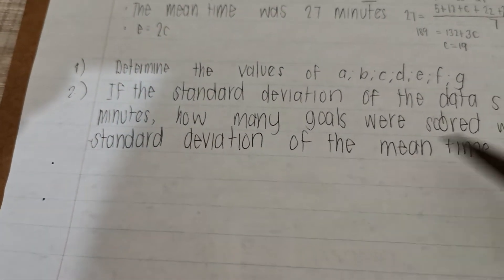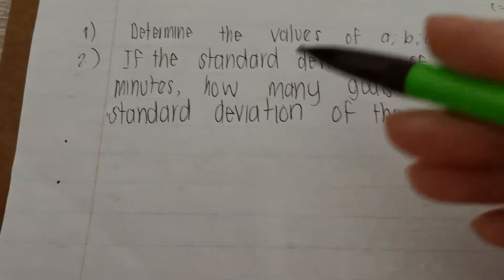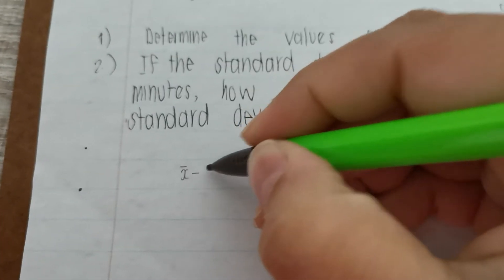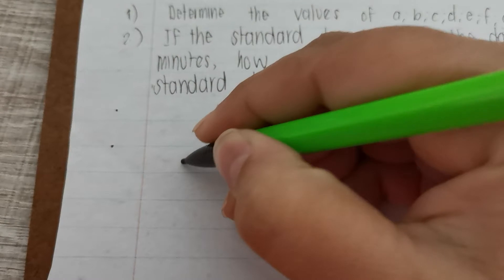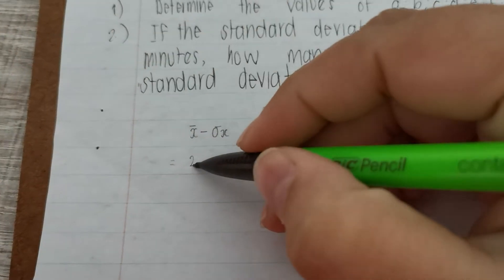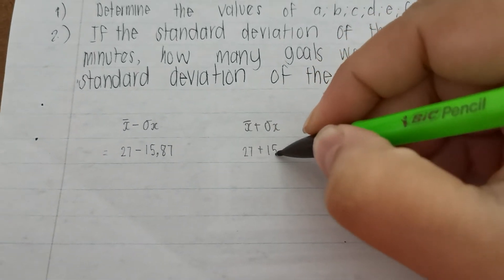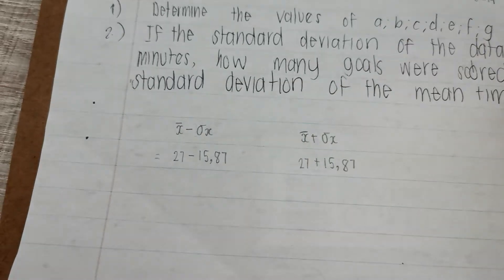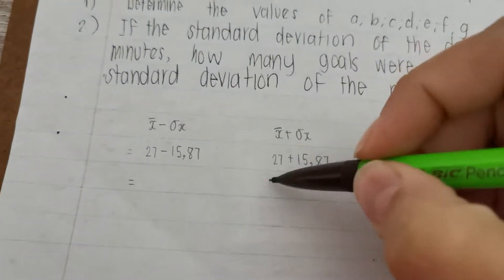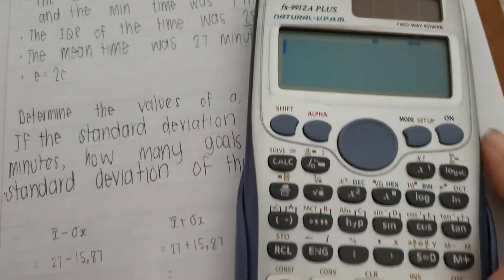How many goals were scored within one standard deviation of the mean time? Now, if we stand within one standard deviation of the mean time, what you're going to do is you're going to say the mean minus one standard deviation, and you're going to say the mean plus one standard deviation. They told us earlier mean time is 27. We don't have to calculate anything.